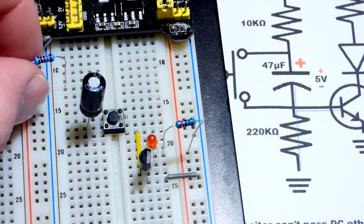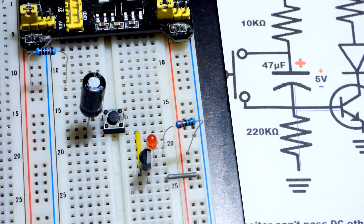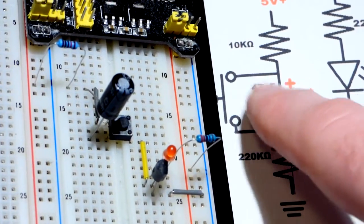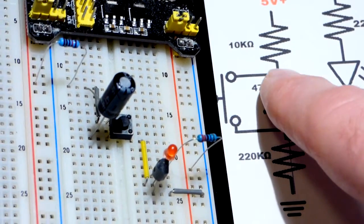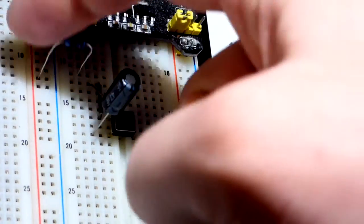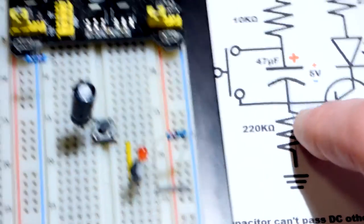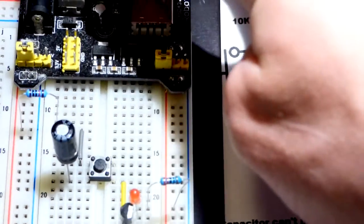I already have the 10 kiloohm resistor here. That goes where the switch and the positive side of the capacitor come together, and then it goes to the positive rail. So now we have, let's turn the power on.